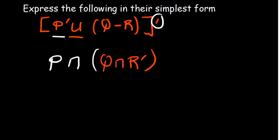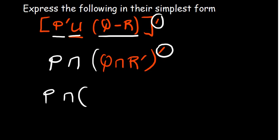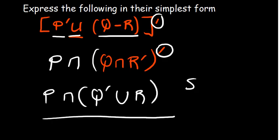We also distribute the same complement that is outside to apply to the brackets. So we've distributed that complement to the brackets, the union, and the P complement. At this point, we distribute that complement again: Q becomes Q complement, the intersection changes sign and becomes a union, and R complement becomes R because the complement of a complement cancels. So this is the simplest form of that set.